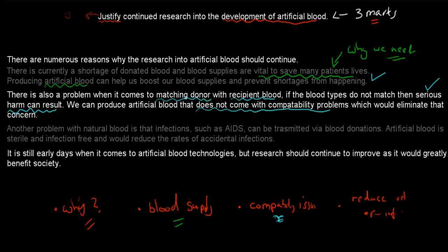And then for the last one, I wrote, another problem with natural blood is that infections, such as AIDS, this was the infections part, can be transmitted via blood donations. Artificial blood is sterile and infection-free, and we reduce the rates of accidental infections. So this was another reason why we would have it, to reduce the rate of random accidental infections. And then that's another mark.